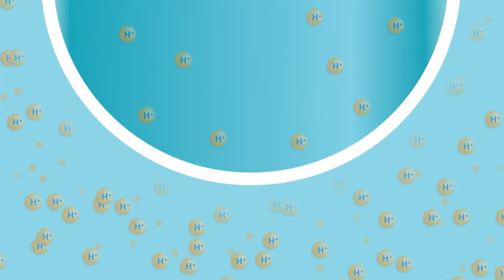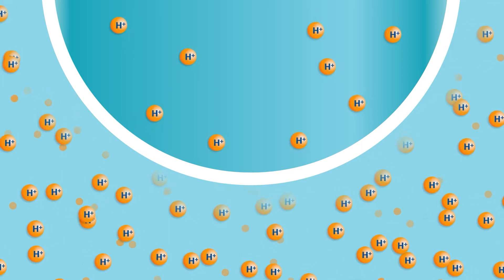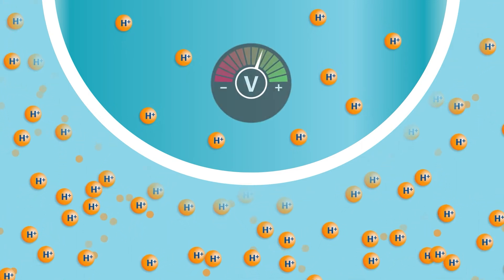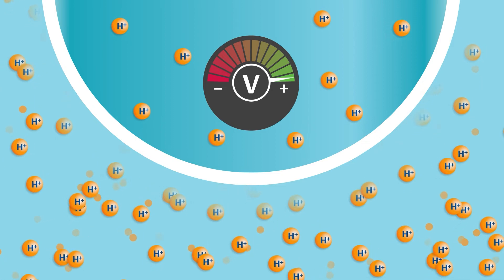If the hydrogen ion concentration is higher on the outside of the glass bulb than on the inside, a positive voltage occurs indicating the process is acidic.